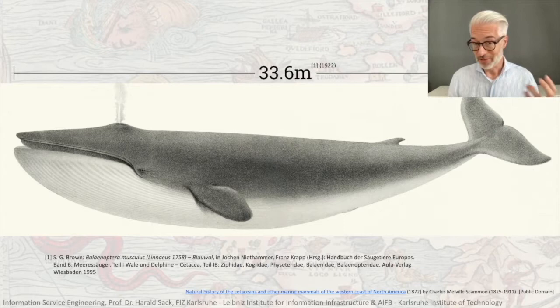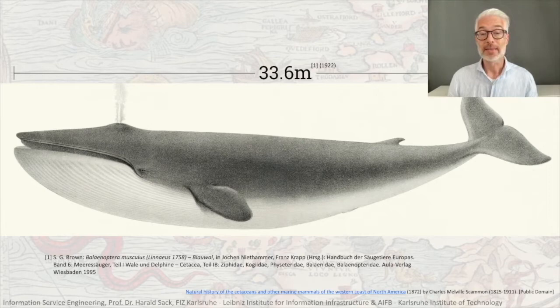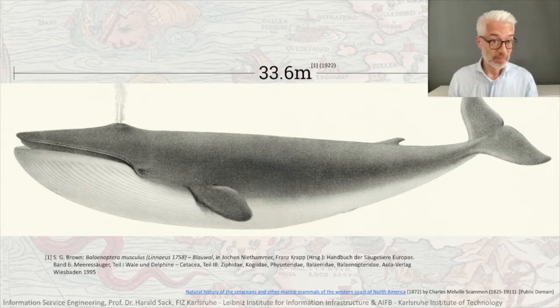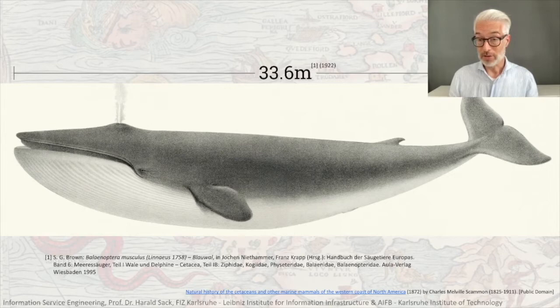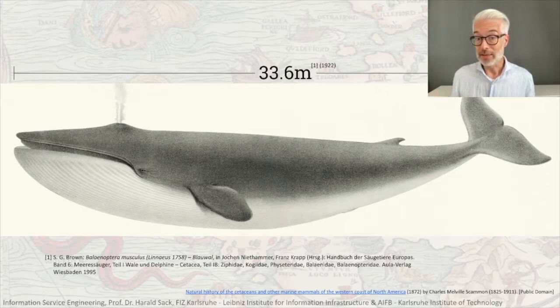The blue whale is the largest animal alive, so you now know several things. According to the reference given here, the largest blue whale measured with scientific methods so far has been 33.6 meters. If you know this, then if you experience a blue whale that is larger — say, 35 meters — this is extraordinary. You can put it in perspective and see that all other animals should be smaller. This is something you can now relate.